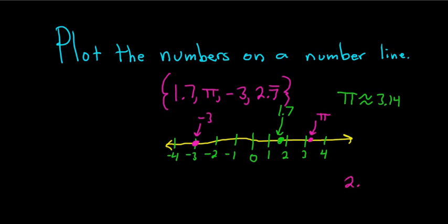And 2.7 bar, well, the bar means that the 7s go on forever. There's an infinite number of 7s. So that's really, really close to 3. I'm going to put it right here. That will be 2.7 bar.